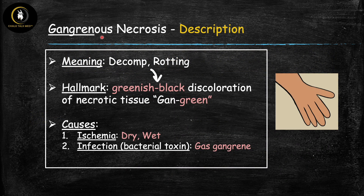Let's start with gangrenous necrosis. Gangrene directly translates to decomposition or decay, and the hallmark feature is a greenish-black discoloration of the necrotic tissue. When you see this black discoloration, that's gangrene. An easy mnemonic: think 'green' for the greenish-black discoloration — so any dark green or black discoloration is gangrene. There are two main causes, starting with ischemia.